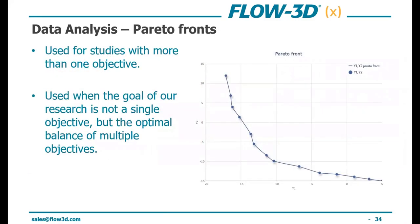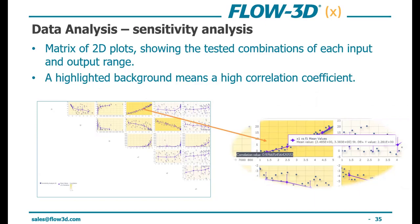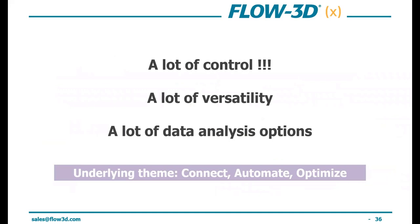Let's look at a few analysis outputs. The first is a Pareto front — used for studies with more than one objective where the goal is not a single target but an optimal balance of multiple objectives. The balanced solution can be found in the highlighted region of the chart. The next type is a matrix of 2D plots — a sensitivity analysis that shows tested combinations for each input and output range, highlighting the best solutions based on high correlation coefficients. There's a lot of control, versatility, and data analysis options available.